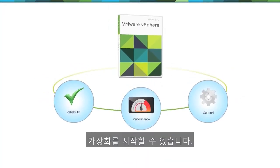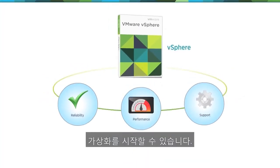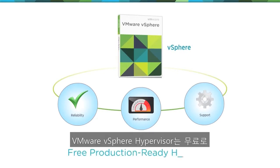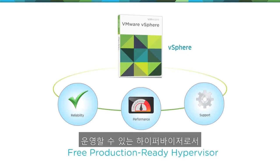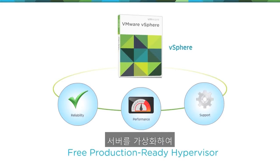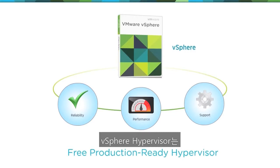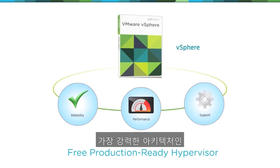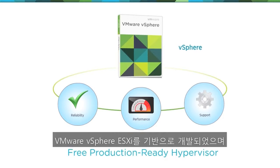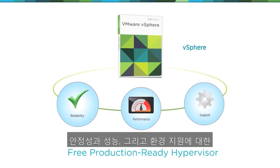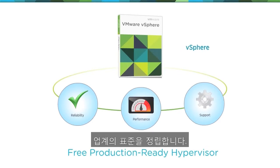Now you can get started with virtualization for free. VMware vSphere Hypervisor is a no-cost, production-ready hypervisor that lets you virtualize your servers, helping you save time and money on managing your IT infrastructure. vSphere Hypervisor is built on the world's smallest and most robust architecture, VMware vSphere ESXi, and sets the industry standard for reliability, performance, and ecosystem support.